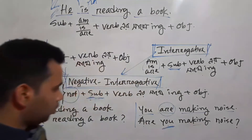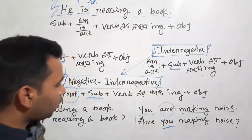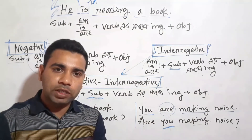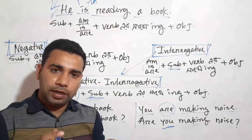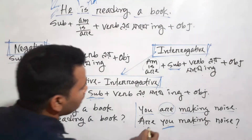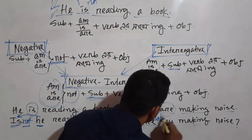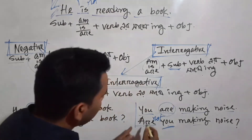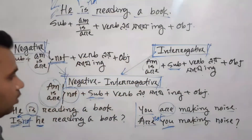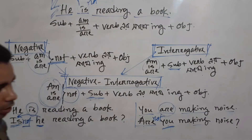The interrogative question is formed by moving the auxiliary before the subject. To make it negative interrogative, you add 'not' after the auxiliary: 'Are you not making noise?' This is a negative interrogative sentence.